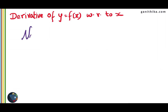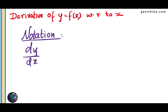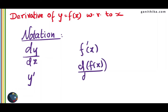The derivative of y, which is also written as f of x with respect to x, uses the notation dy over dx. We can also write that as y prime or y dash. We can also write this as f dash of x, or d over dx of f of x. All these notations represent the derivative of y with respect to x.